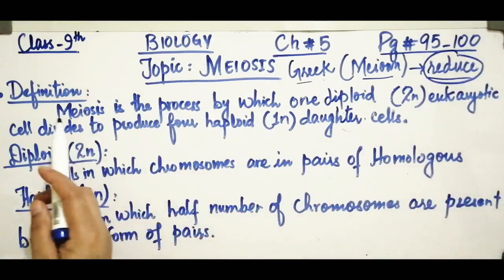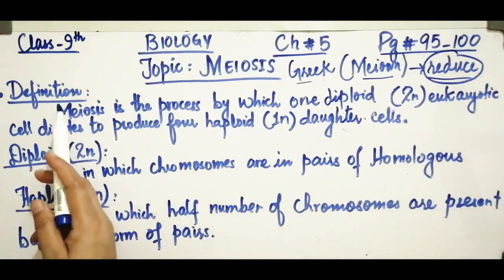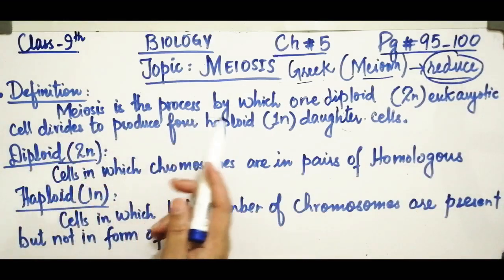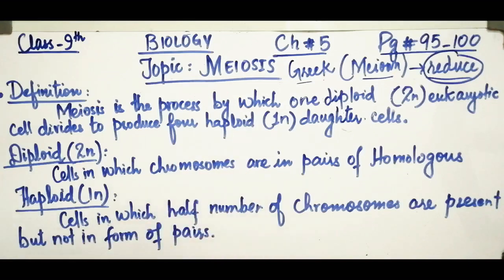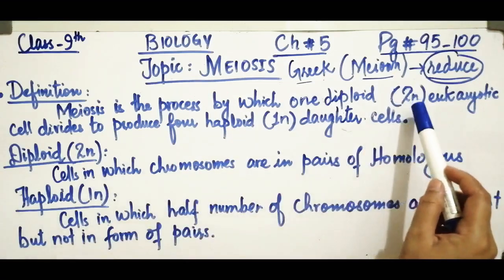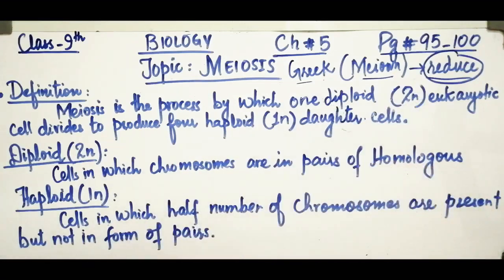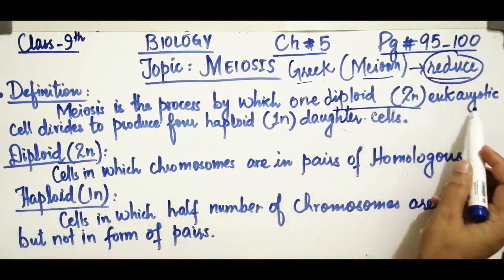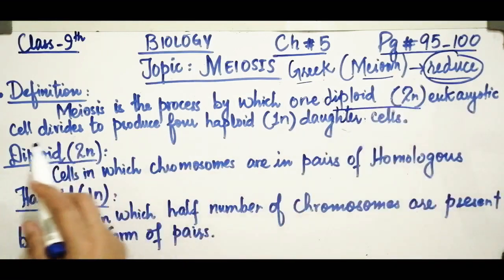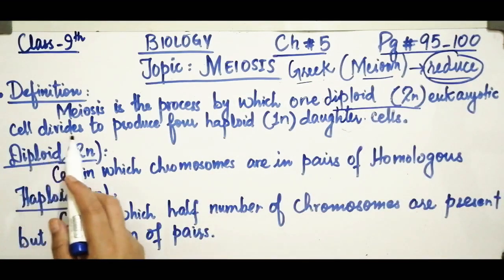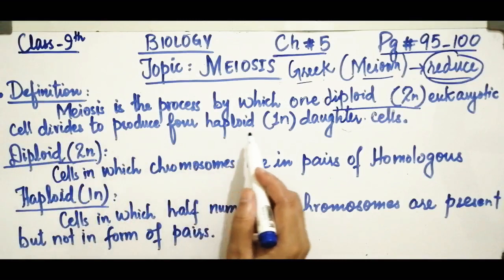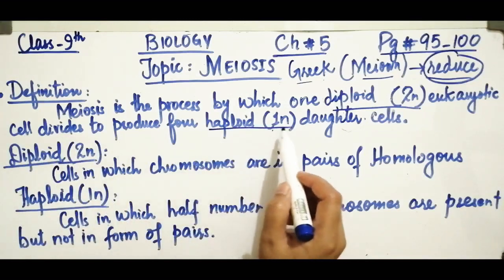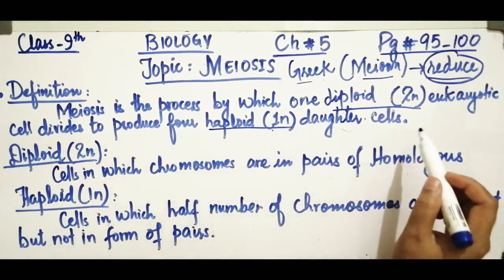Now let us come to the definition of meiosis. What is meiosis? It is the process by which one diploid — that is, 2N — eukaryotic cell divides to produce four haploid daughter cells. Haploid is represented by 1N. So one diploid eukaryotic cell produces four haploid daughter cells.